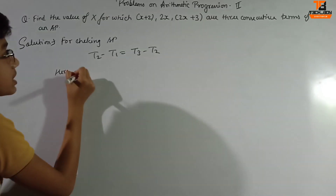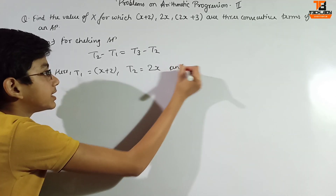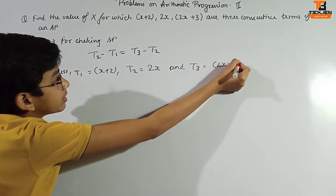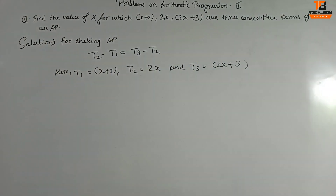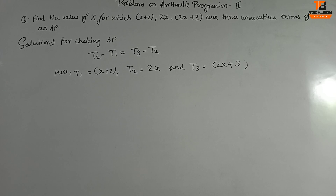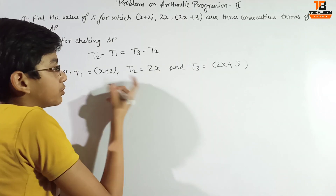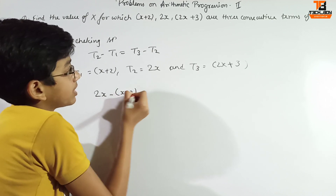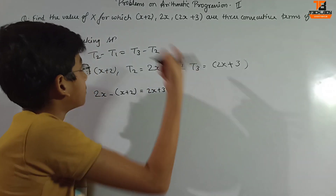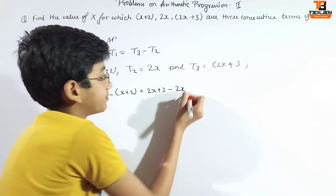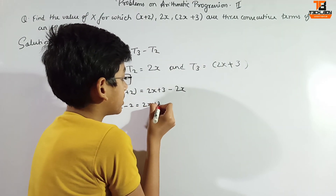Here, t1 is equal to x+2, t2 is equal to 2x, and t3 is equal to 2x+3. Now putting all values into the formula: t2 minus t1 equals t3 minus t2. So, 2x minus (x+2) equals (2x+3) minus 2x. Simplifying: 2x minus x minus 2 equals 2x plus 3 minus 2x.